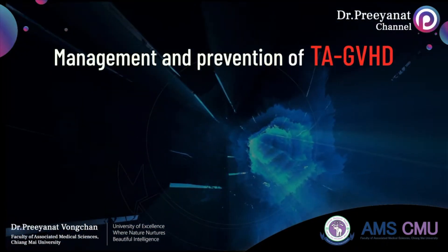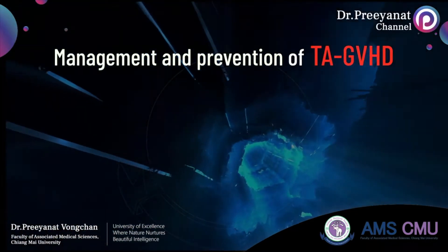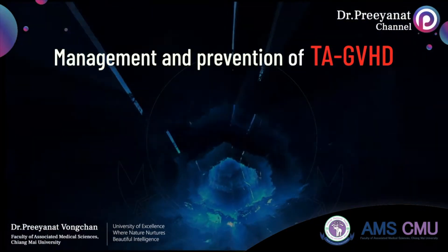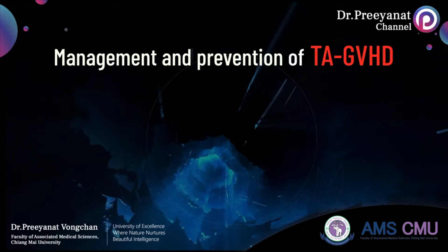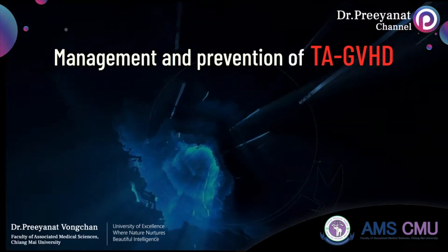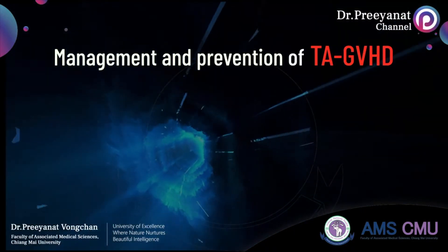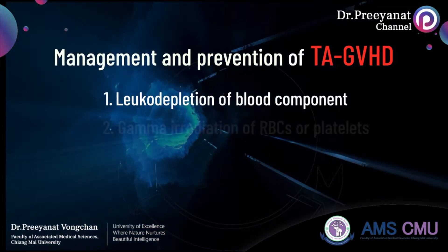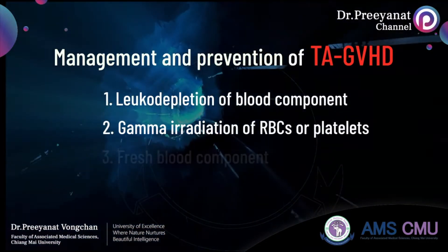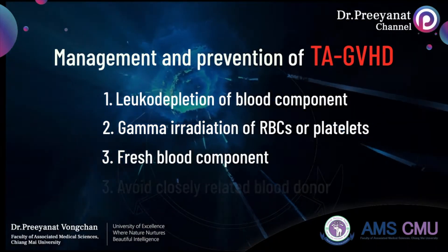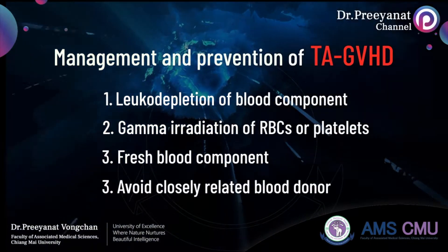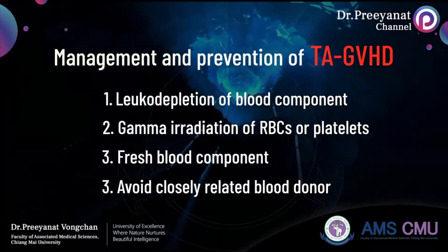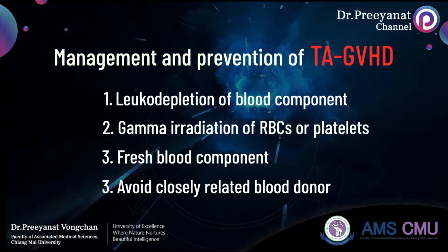According to the factors influencing severity, prevention of TA-GVHD can be achieved by appropriately preparing blood components for patients at risk, including filtration, gamma irradiation, use of fresh blood components, and avoiding use of closely related blood donors. If necessary, HLA-matched components are recommended.